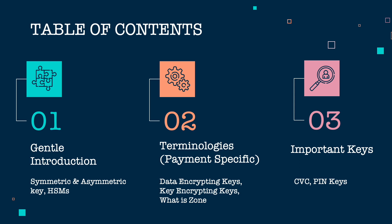This video is split into three chapters. In the first chapter, we will look at basics of cryptography, which is common across all industries, not specific to payments. We will look at symmetric key cryptography, asymmetric key cryptography, and what is an HSM. In the second chapter, we will cover some important terminologies about payment-specific cryptography, which includes data encrypting keys, key encrypting keys, and what is a zone. In the third chapter, we will look at some important keys like the CVC keys, PIN keys, etc.